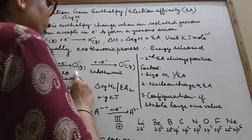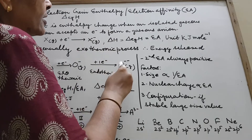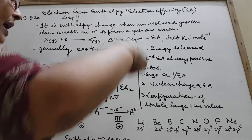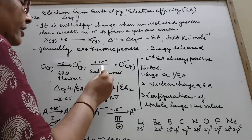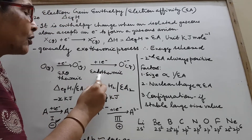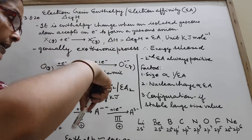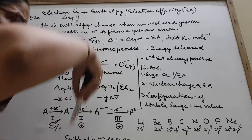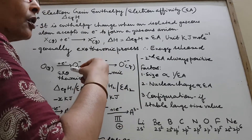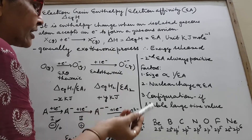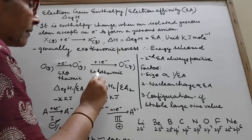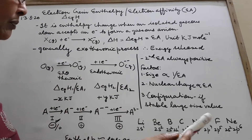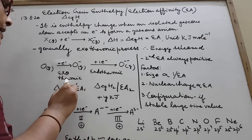Once we have O⁻, if we want to add a further electron, it gets converted into O²⁻. This time it was difficult to add the electron — energy had to be provided. So this step was endothermic; energy was supplied, hence the value is +Y kJ/mol — positive. We call this EA2, or ΔegH₂.